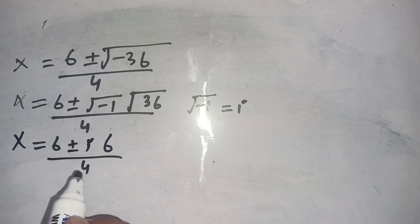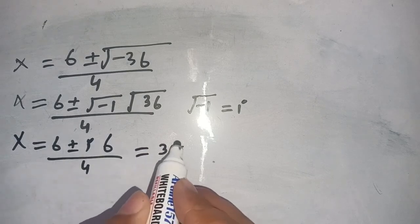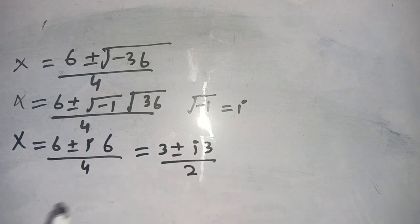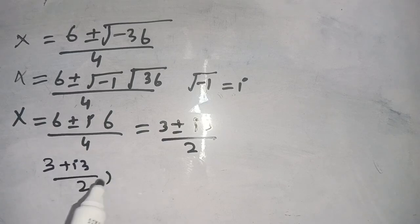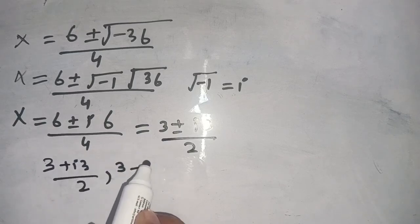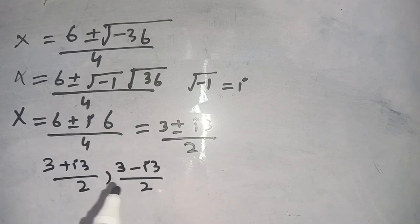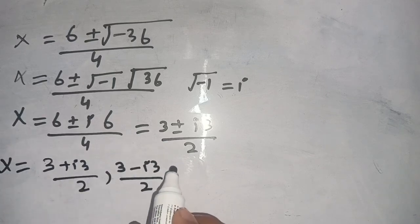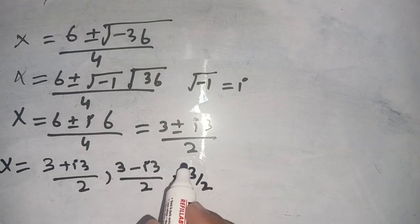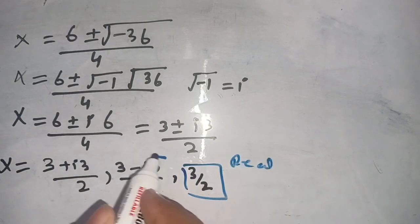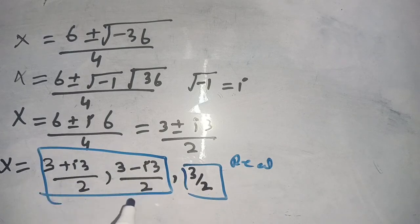Since the square root of minus 1 equals iota (i), this gives x equals (6 plus or minus 6i) divided by 4, which simplifies to x equals 3 plus or minus 3i divided by 2. The two complex roots are (3 plus 3i) over 2 and (3 minus 3i) over 2. Combined with the real root x equals 3 over 2, there are three roots in total.